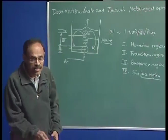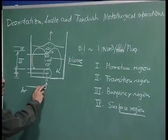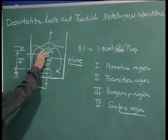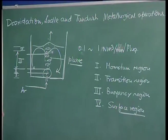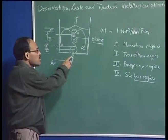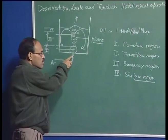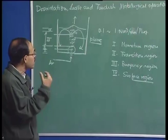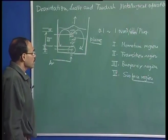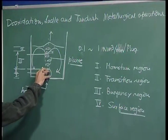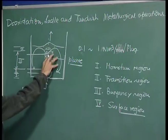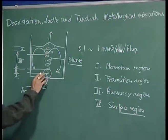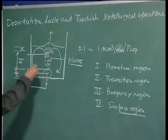In ladle metallurgy steelmaking, the nozzle dimensions are not critical to the characteristics of the plume and the bulk recirculation. Whether we inject gas through a porous plug, a nozzle, or a submerged lance, the circulation produced is not going to be critically dependent on the nature of the gas injection device. In regions 1 and 2, some noticeable difference may be seen depending on the gas injection device, but in the buoyancy region, it will be virtually unaffected by the details of the nozzle.